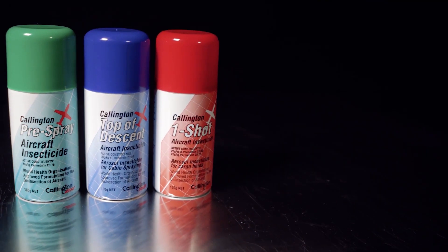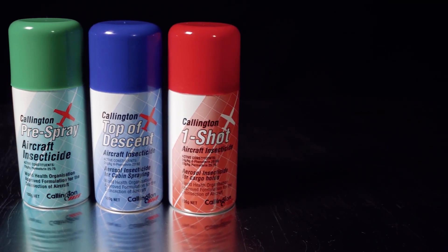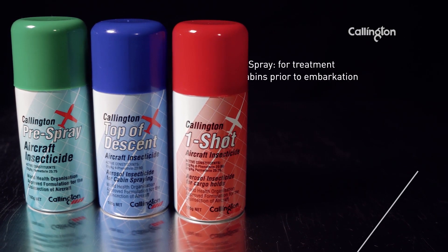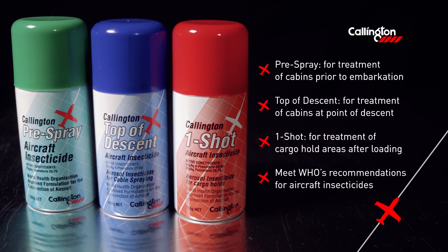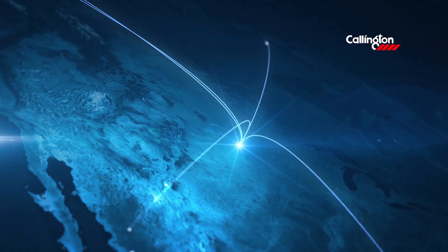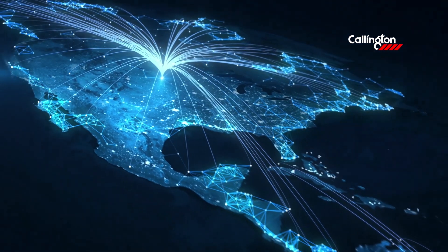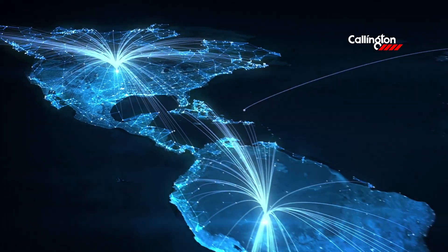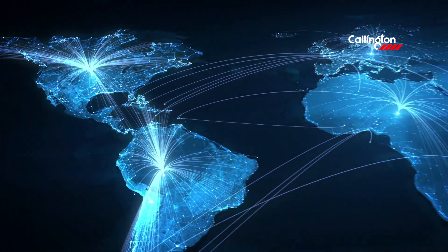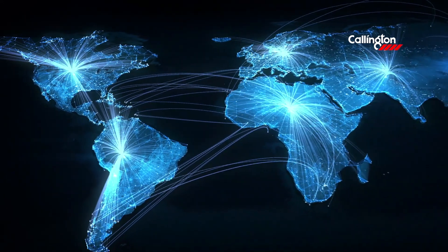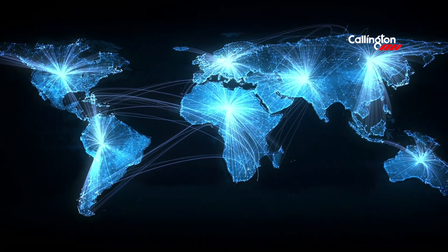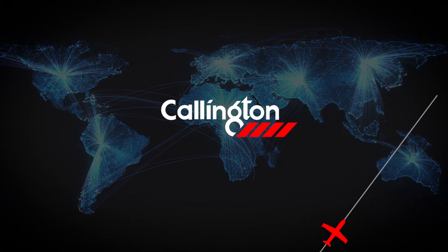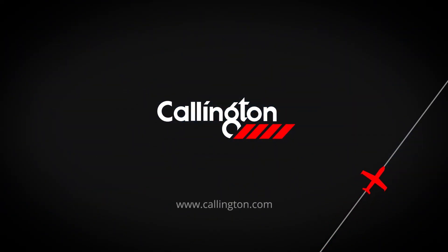Cullington free spray, top-of-descent and One-Shot are non-flammable and contain a non-CFC propellant. Approved for use in aeroplanes, each spray meets the World Health Organization's recommendations for aircraft insecticides. Cullington provides worldwide technical support for aircraft disinsection and is equipped to supply disinsection products to airlines across the globe. For more information or to contact Cullington, visit www.cullington.com.